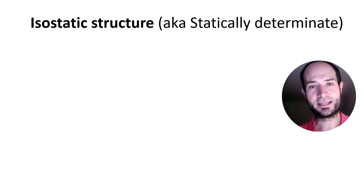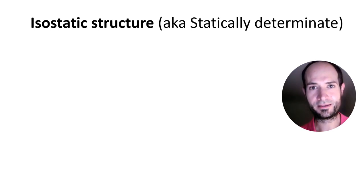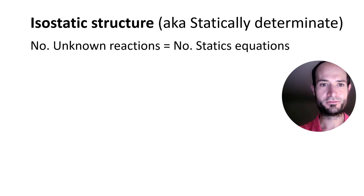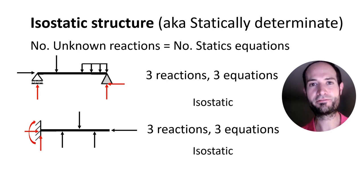For any structure to be stable it requires a minimum of three restrictions. If we have a structure with three restrictions, we will be able to solve it just with the equations of statics — we will have three unknown reactions and three different equations. For example, we have a bridge with a roller support on the left and a pin support on the right, giving a total of three reactions. Therefore it is isostatic and we can solve it directly with the equations of statics.